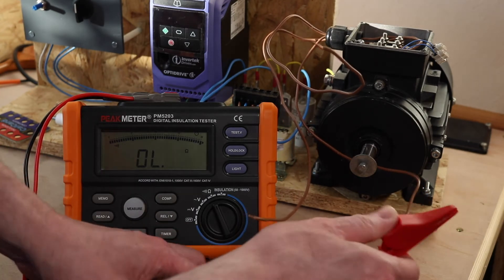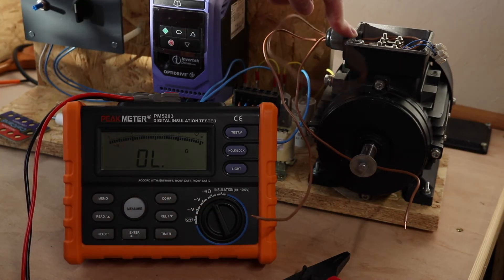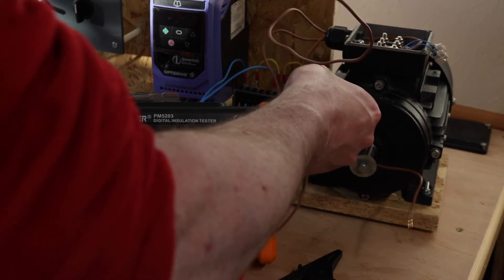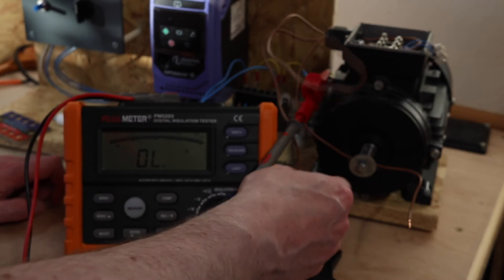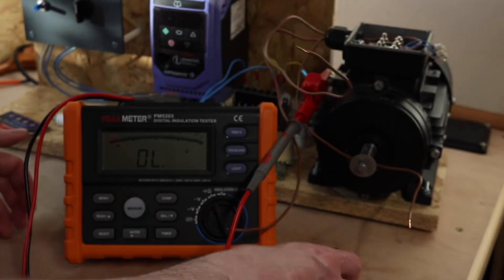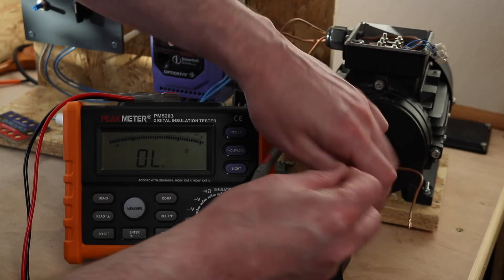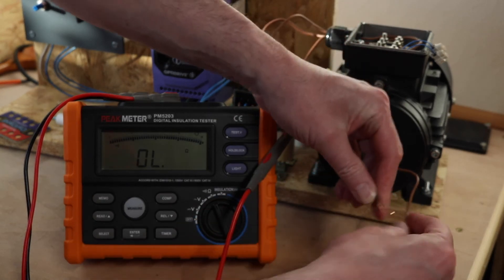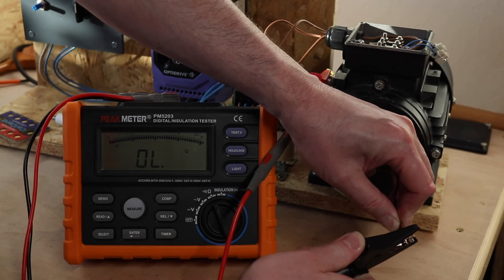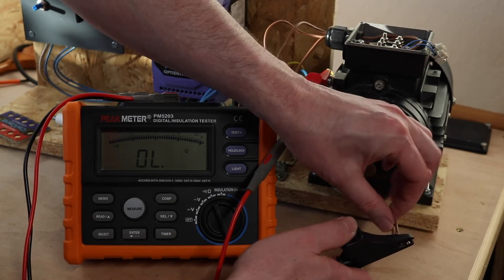Now we move on to an insulation test. For this particular motor, just because it's wired in Delta configuration and I've got combined windings in there, it's just going to be one test that I do. One probe onto the earth and then the other I'm going to link these three phase wires together, get the croc around them as one.